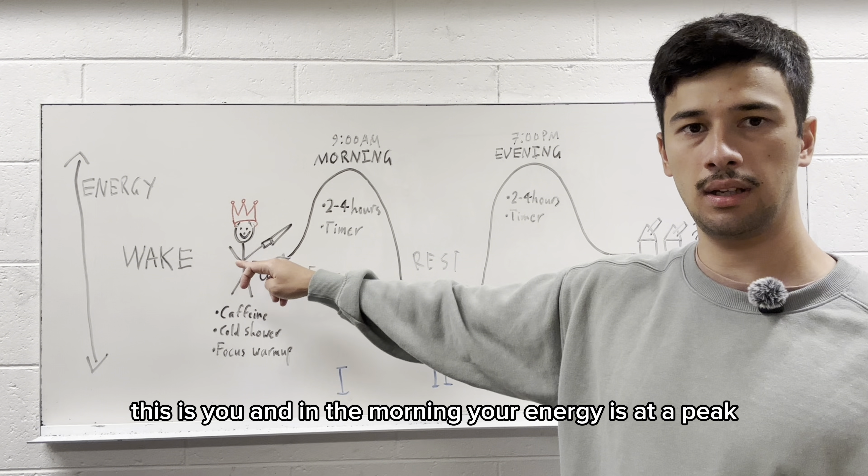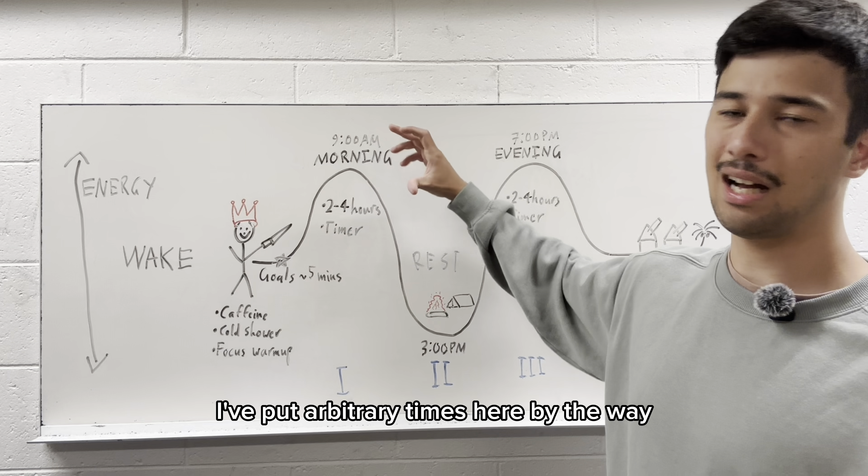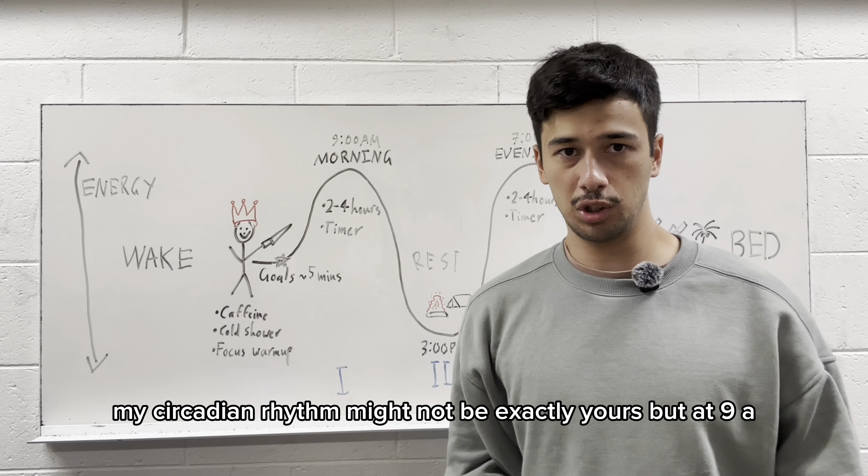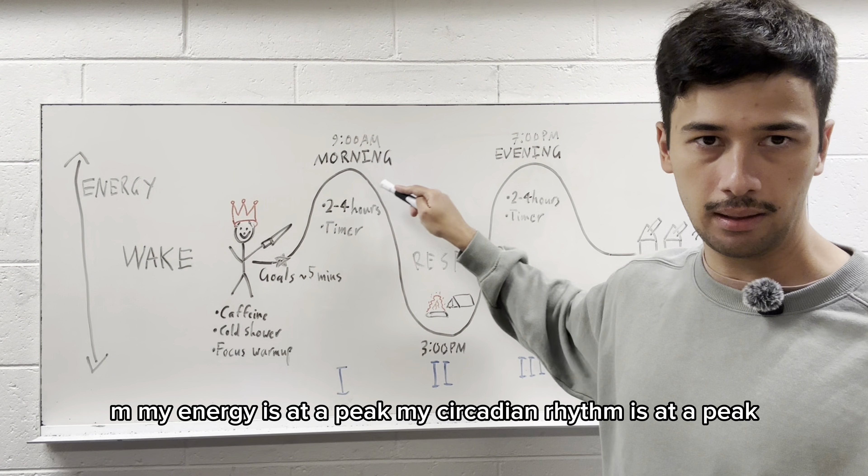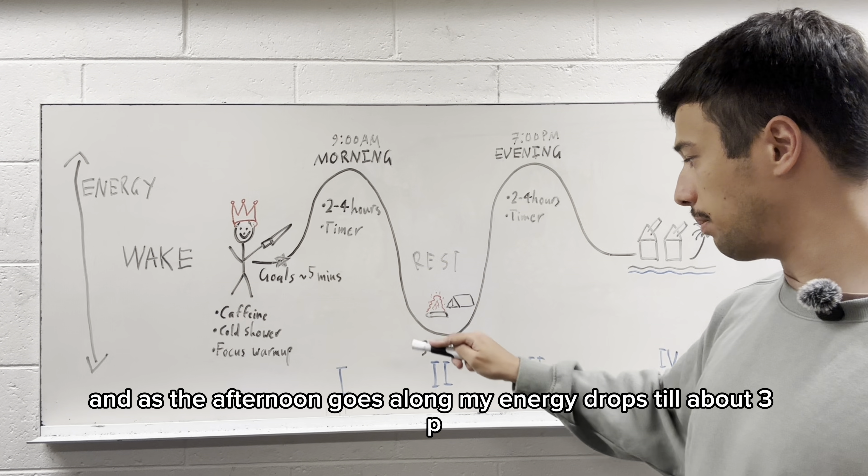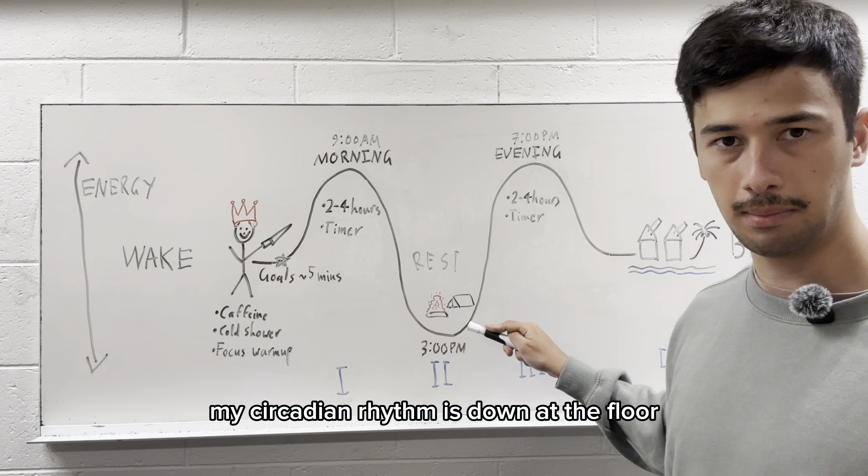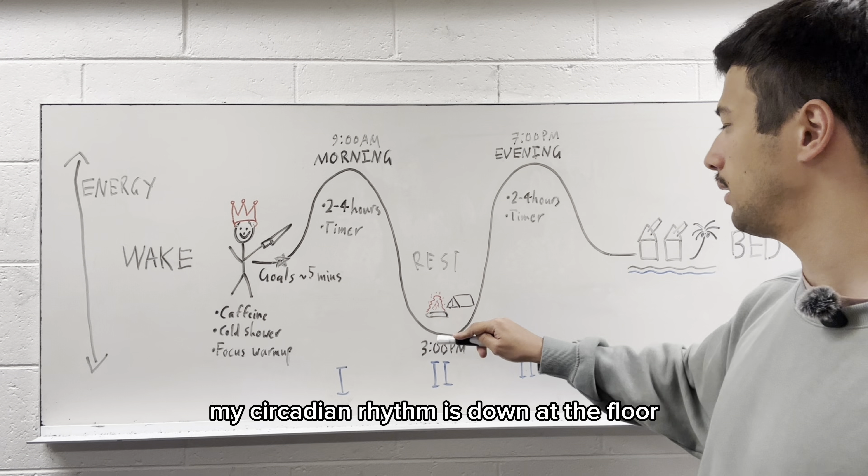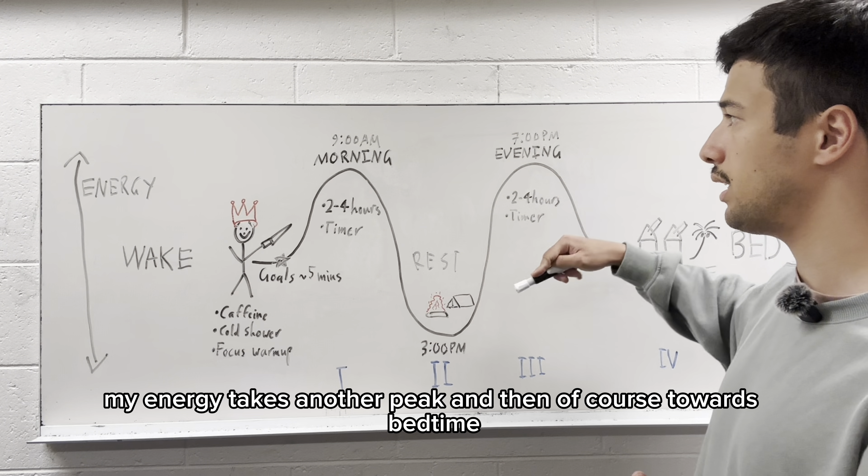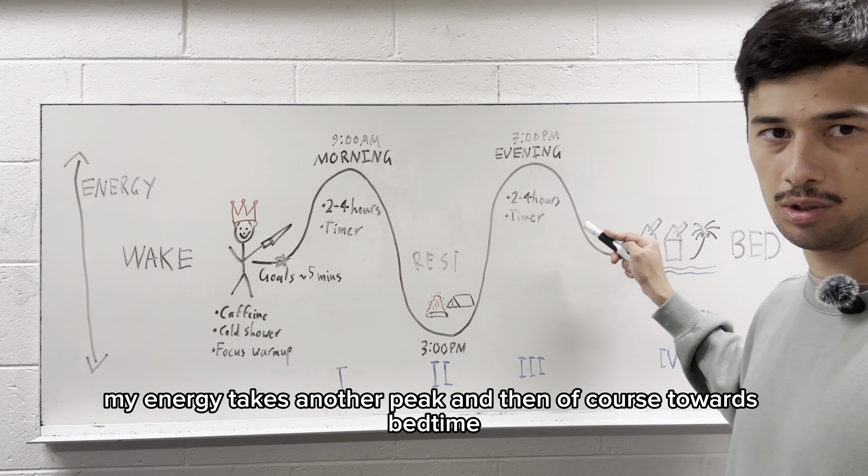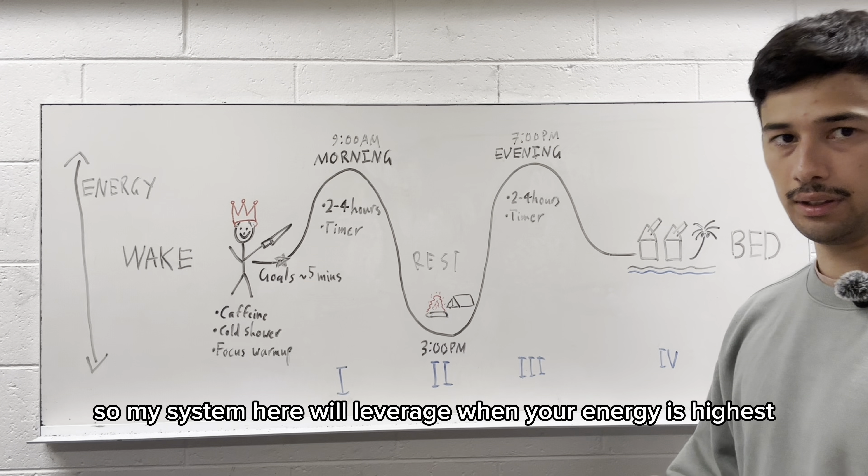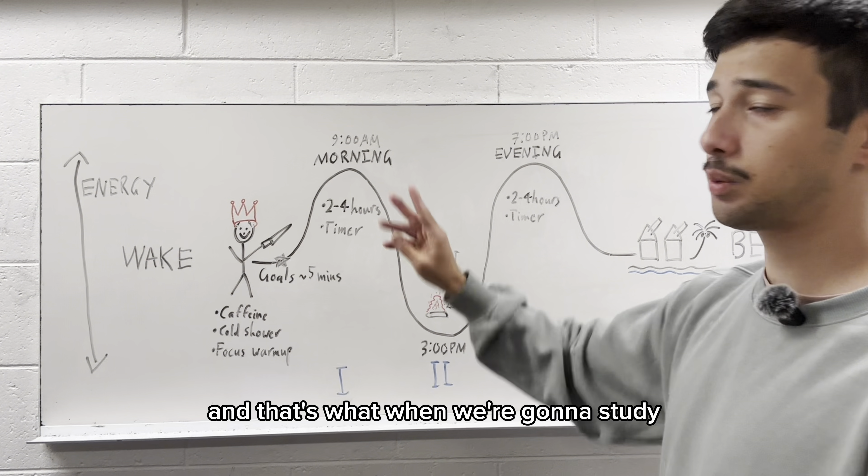You wake up in the morning. This is you. And in the morning, your energy is at a peak. I've put arbitrary times here, by the way. This is just me. My circadian rhythm might not be exactly yours, but at 9am, my energy is at a peak. My circadian rhythm is at a peak. And as the afternoon goes along, my energy drops till about 3pm. I literally want to go to sleep. My circadian rhythm is down at the floor. But then what happens is my energy goes back up. And at about 7pm around evening, my energy takes another peak. And then of course, towards bedtime, my energy goes down.